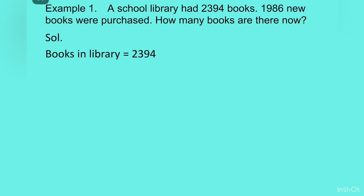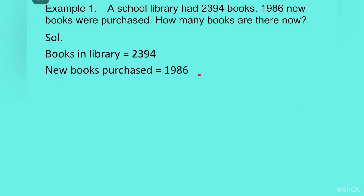Now we will read the second line in the question: 1986 new books were purchased. So we will write: new books purchased is equal to 1986. Again, back to the question — how many books are there now? So total number of books in the library — for that, we will have to add the old books and the new books.